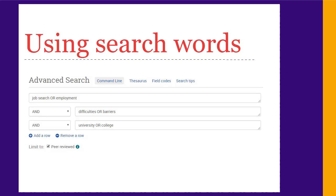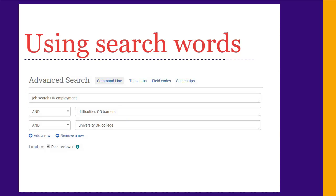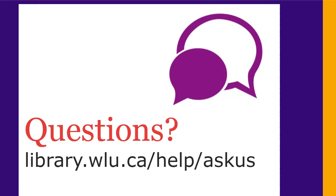In many of the library search engines, you put the alternate words for the same concept on one line separated with OR, and the different concepts on different lines separated by AND. You can find out more about using search words effectively in some of our other videos. If you have a clear topic, search in the right place, and think about how to search, your searching will be more successful. If you have any questions, ask us at library.wlu.ca/help/ask-us.